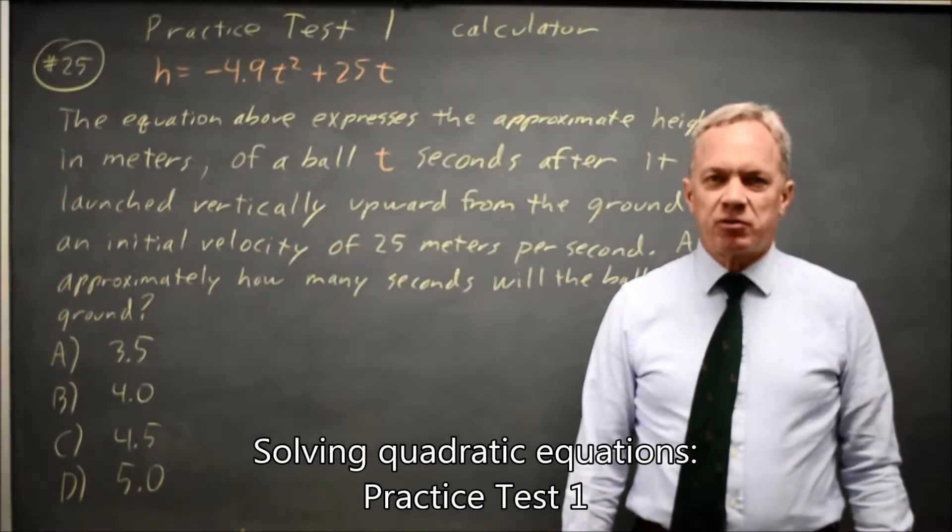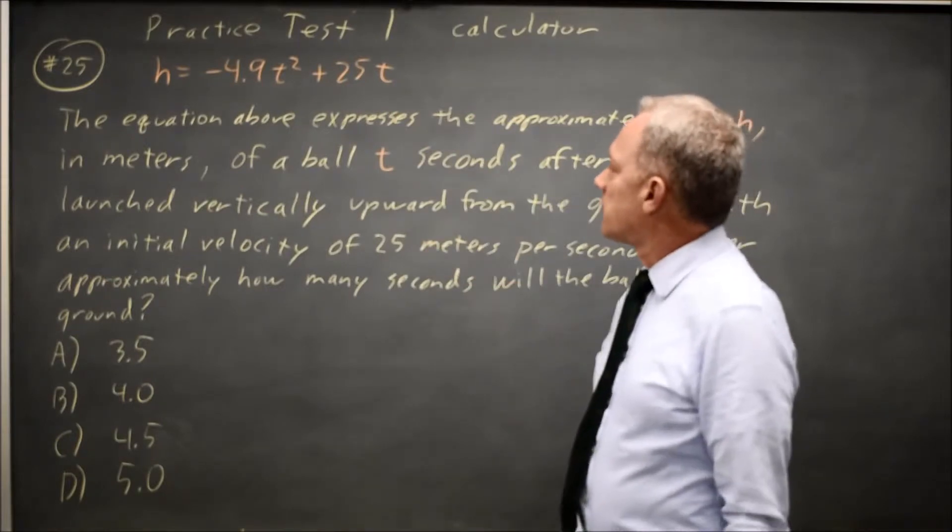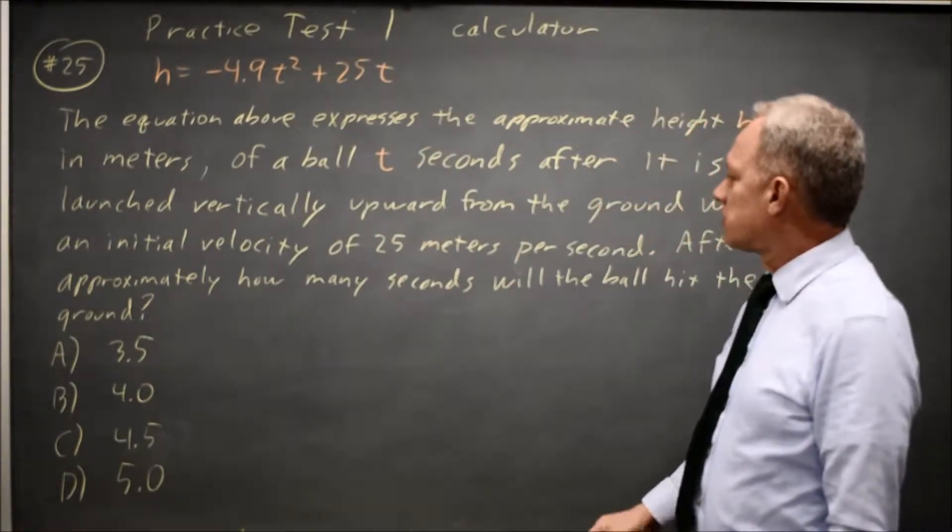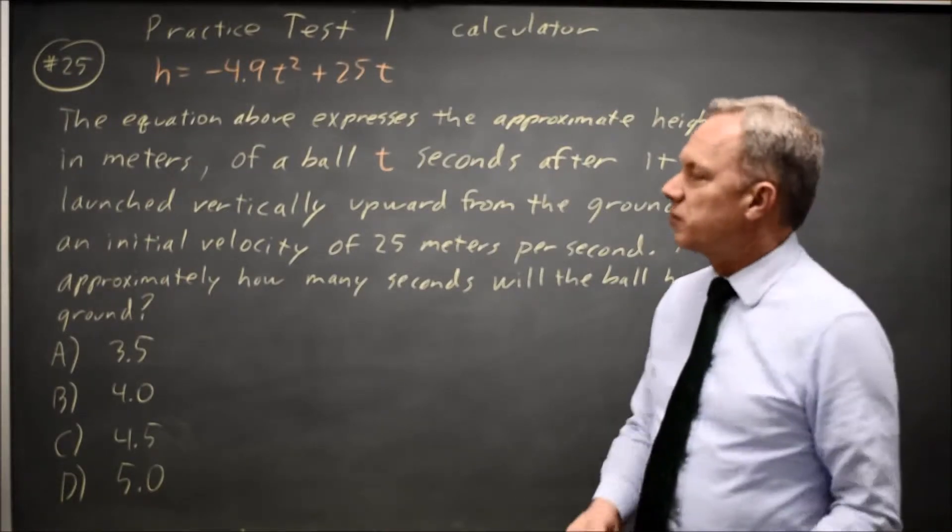This is calculator question number 25 from Practice Test 1. College Board gives us an equation describing the height of a ball t seconds after it's launched vertically and asks after approximately how many seconds will the ball hit the ground.